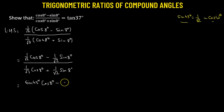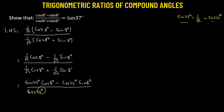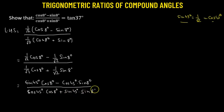In the first term of the numerator, we replace 1 over square root of 2 with sine 45 degrees, multiplied to cosine 8 degrees. In the second term, we use cosine 45 degrees multiplied to sine 8 degrees. For the denominator, we have cosine 45 degrees multiplied to cosine 8 degrees plus sine 45 degrees times sine 8 degrees.